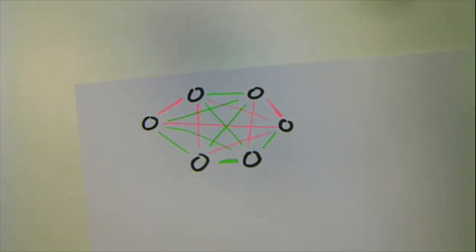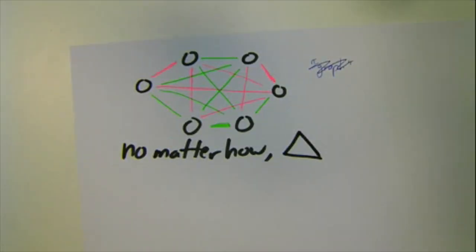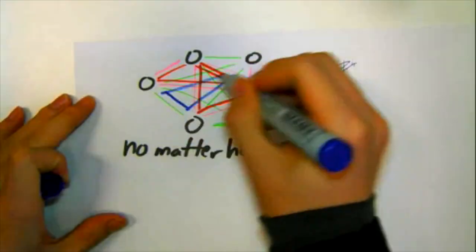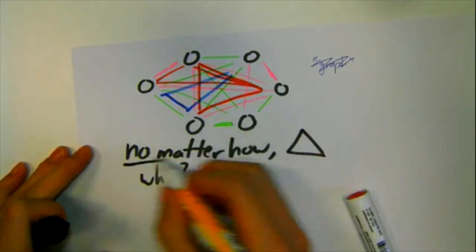and enemies by drawing a green line. There is something very interesting about this arrangement. No matter what people are friends and enemies, there will always be a triangle of friends, a triangle of enemies, or one or more of both. Pause the video right now, get a piece of paper, and try it yourself.